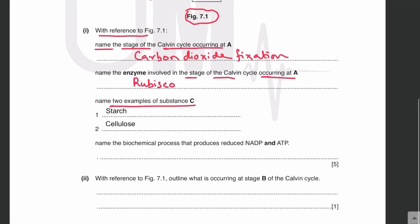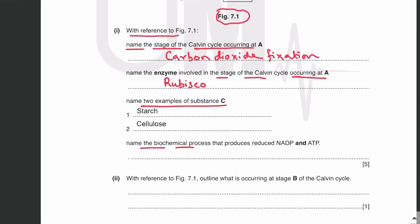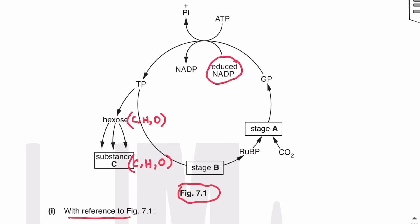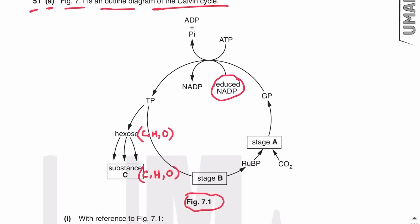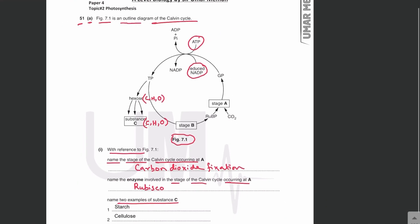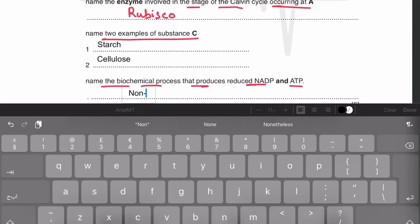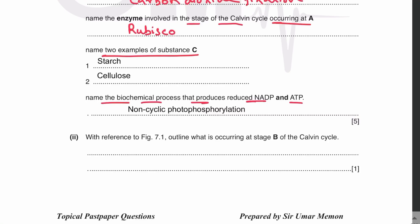Name the biochemical process that produces reduced NADP and ATP. In the Calvin cycle, reduced NADP and ATP are being used. These molecules come from the light-dependent stage. Specifically, they are made during non-cyclic photophosphorylation, which is the process that produces both reduced NADP and ATP.